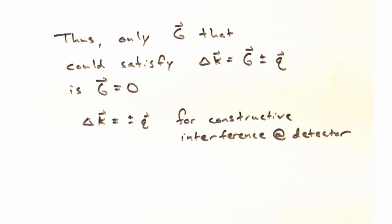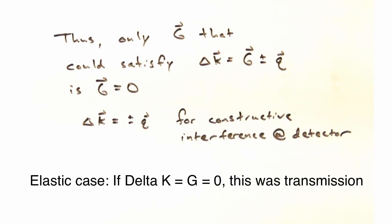As a reminder, for the elastic case where we had delta k equals g equals zero, that was simply transmission, where you had a k in and a k out, and the difference between those two was null.